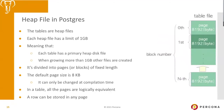Postgres uses heap files to store data for all tables. Each heap file has a limit of 1 GB — that doesn't mean the table is limited to 1 GB, just the individual file, so a table grows into multiple heap files. The pages inside heap files are 8 KB by default. This is the default value; you can technically change it, but only by recompiling the database, and it's generally not advisable.